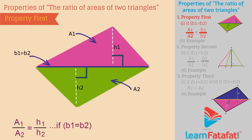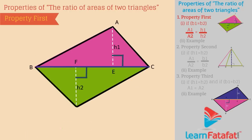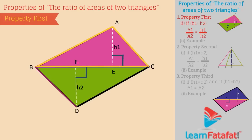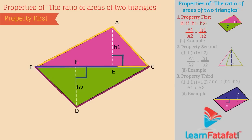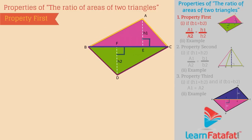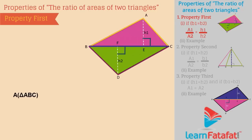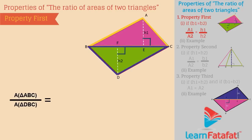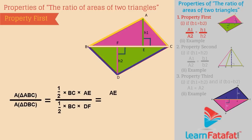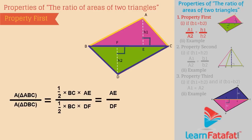Dear students, let us see how this relation is derived. In the figure, there are two triangles — triangle ABC and triangle DBC — which have common base BC. The ratio of areas of these two triangles can be given as: Area of triangle ABC divided by area of triangle DBC is equal to half into BC into AE, divided by half into BC into DF, which is equal to AE divided by DF. This gives the ratio of heights of the two triangles.